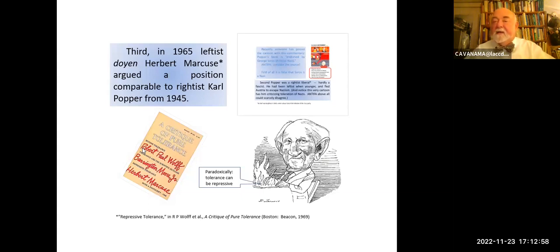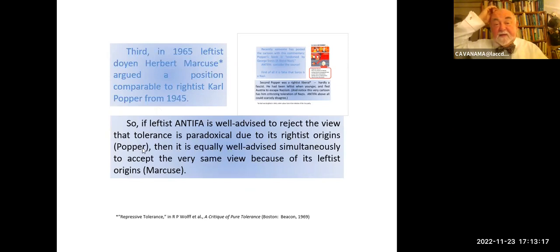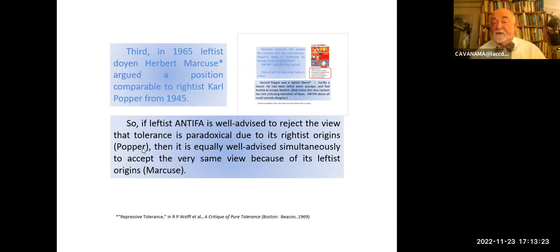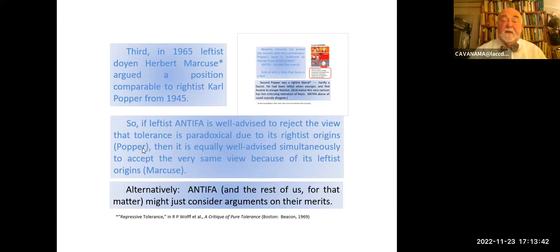So fast forward to 1965. Leftist Herbert Marcuse — the main philosopher associated with the left in the 60s — argues a position comparable to what Popper argued from the right in 1945: tolerance can be repressive, as one of his famous essays argues. If leftist Antifa is well-advised to reject the view that tolerance is paradoxical due to its rightist origins in Popper, then it's equally well-advised simultaneously to adopt that very same view because of its leftist origins in Marcuse. Does that make any sense? Alternatively, Antifa and the rest of us might just consider arguments on their merits. This paradox of tolerance is something to pay attention to.